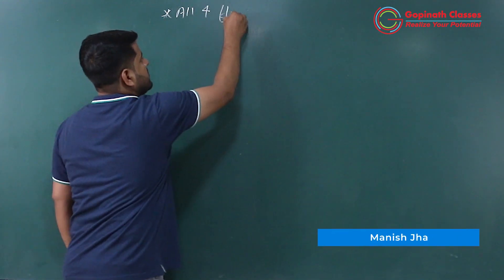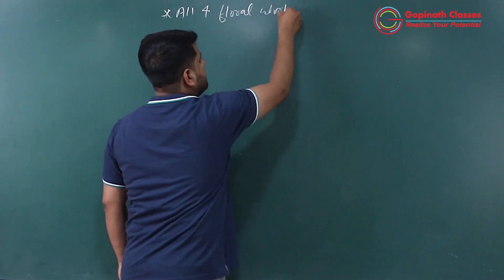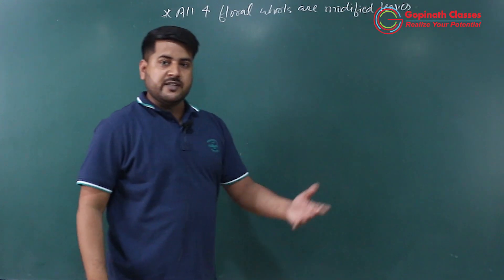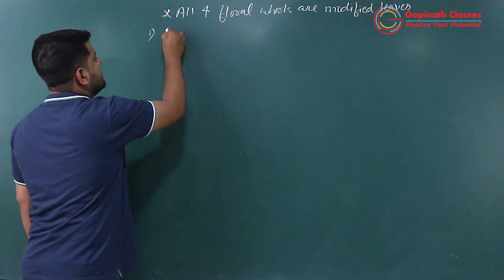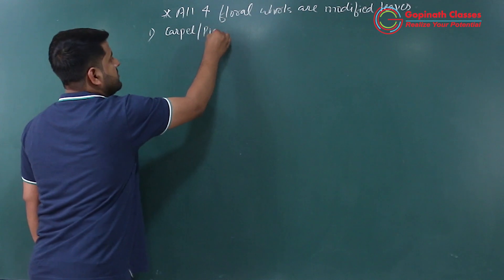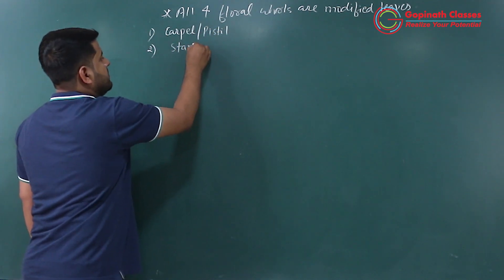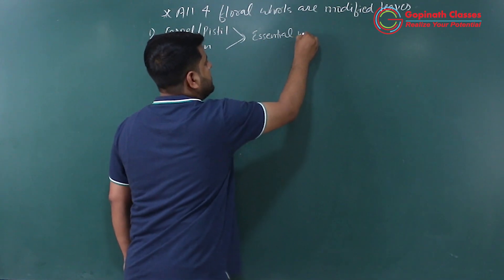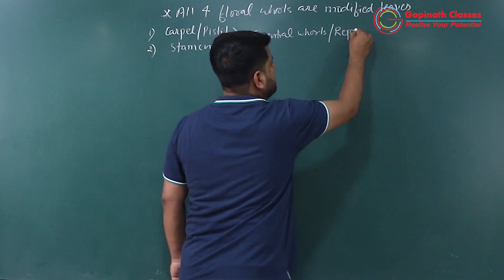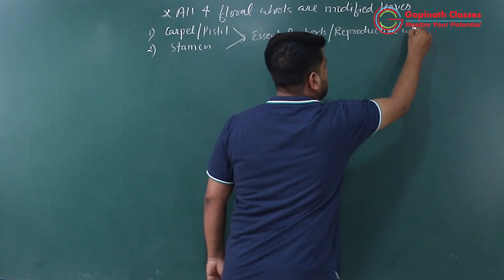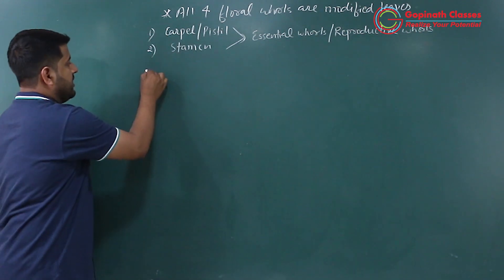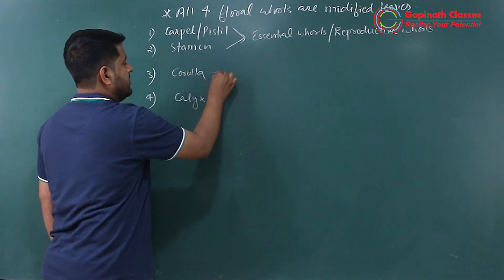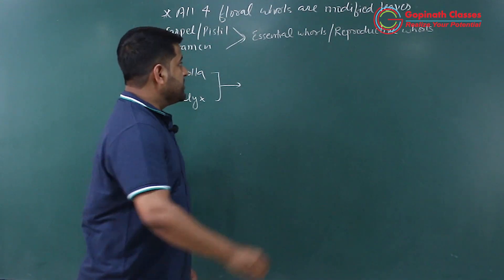All four floral whorls are modified leaves. We saw four floral whorls in which first was carpel or pistil and second was stamen. These two participate in reproduction which we call essential whorls or reproductive whorls. And the third one is corolla and the fourth one is calyx. These two directly participate in reproduction which we call non-essential whorls.